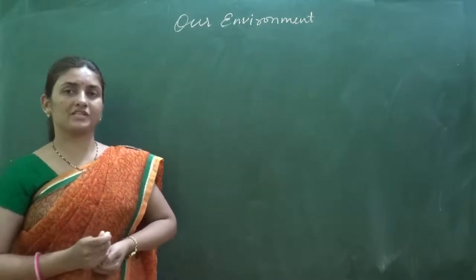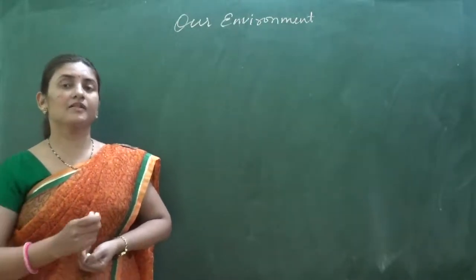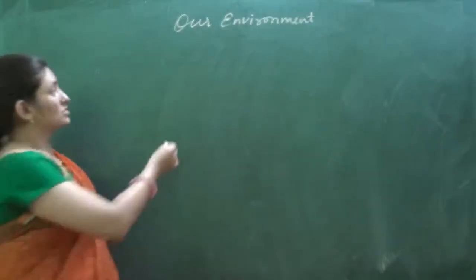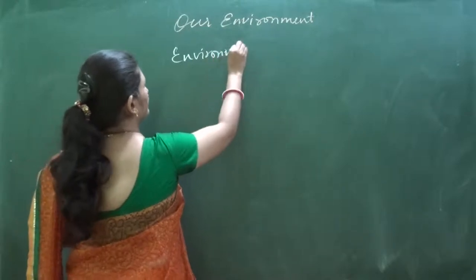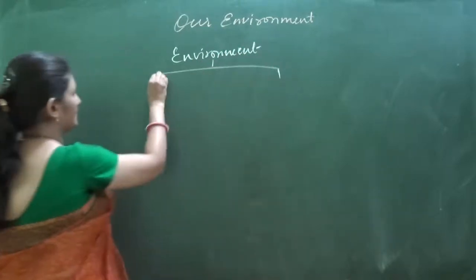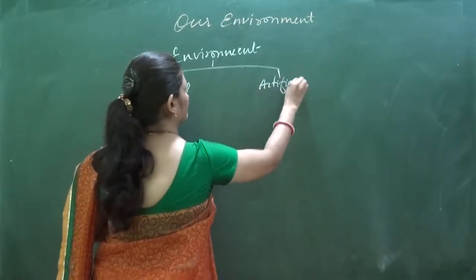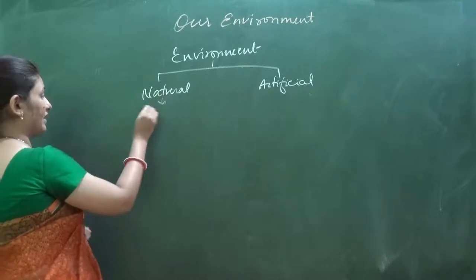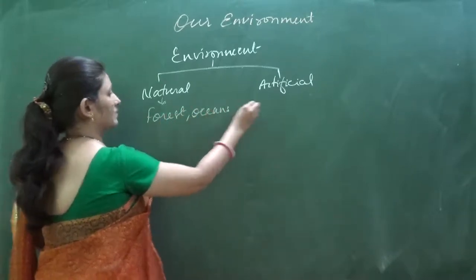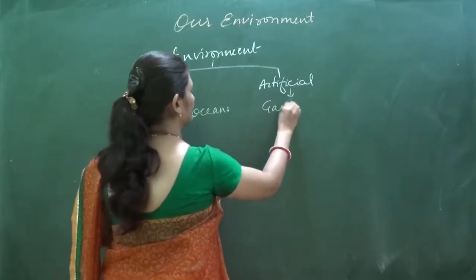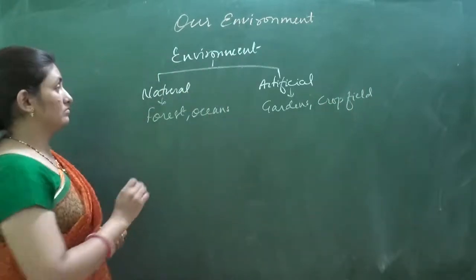The natural environment includes the forest and the oceans, which are naturally occurring. The artificial environment includes the gardens, the parks, and the aquarium — those are artificial. Yesterday we discussed the definition of environment, the natural environment and the artificial environment. Natural environment includes forests and bushes; artificial environment includes gardens and crop fields, which are man-made environments.